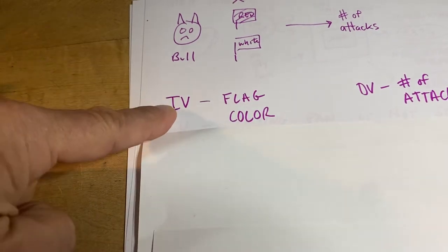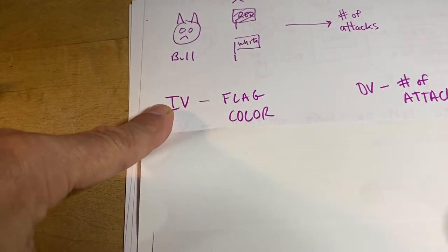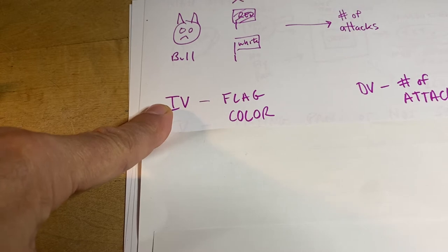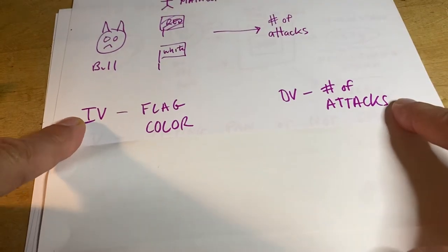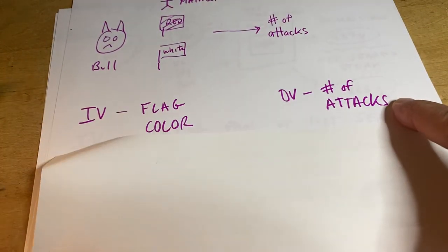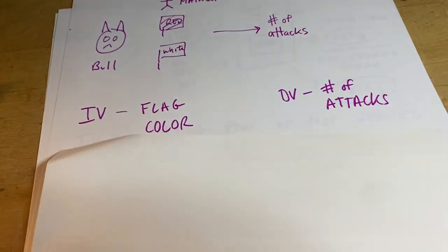So that would be our independent variable. And then they're trying to measure how many times the bull attacks that flag, and so that's our dependent variable. We're trying to see if attacks depend on flag color.